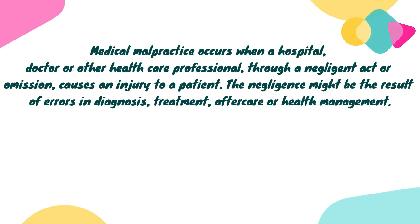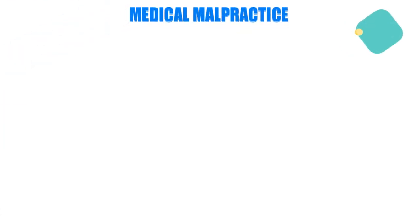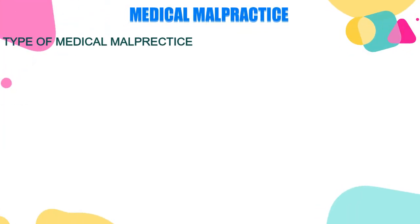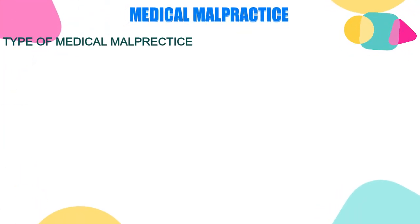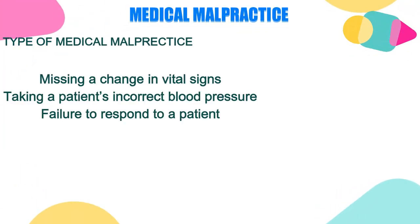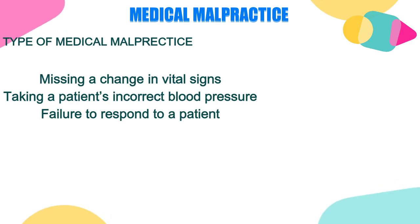Now let's see what those are. Types of medical malpractice: missing a change in vital signs, taking a patient's incorrect blood pressure, and failure to respond to a patient.